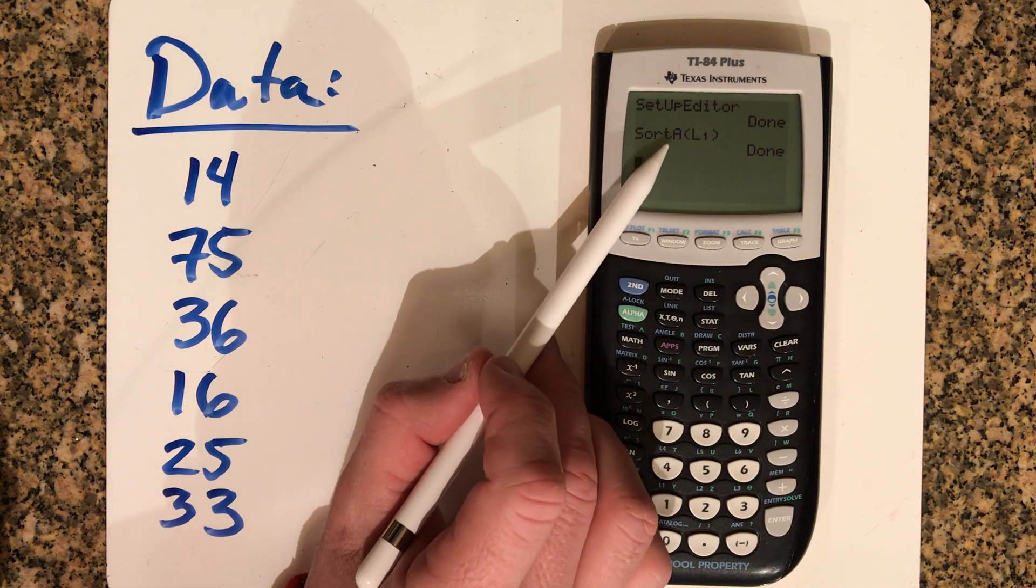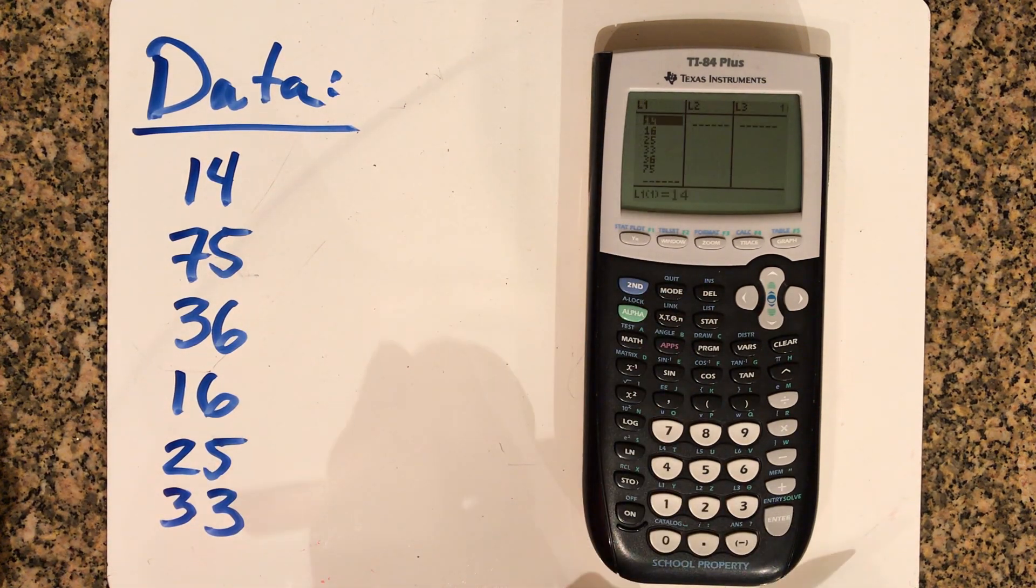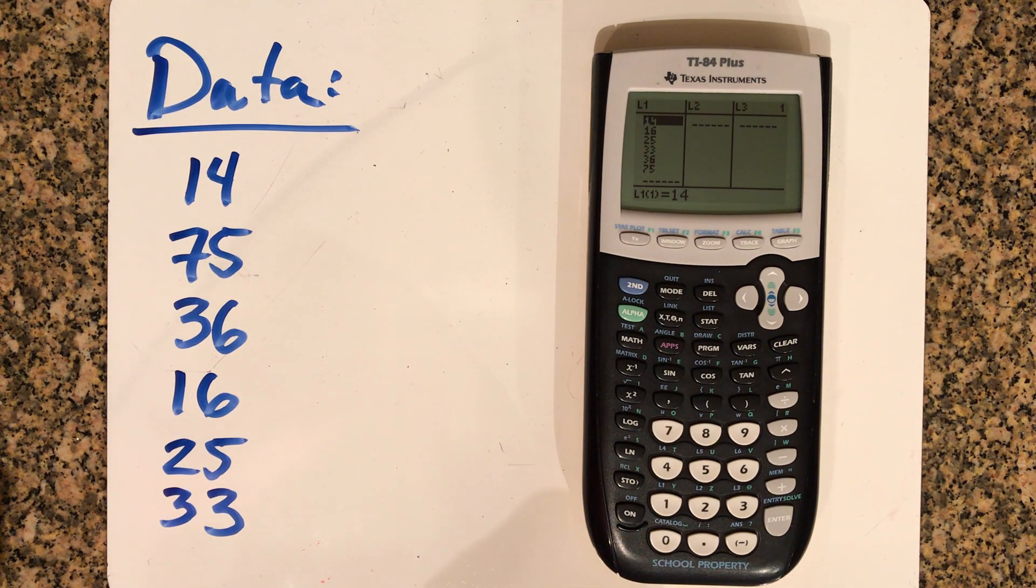And then now what's just happened in the background is on the stat window. When I go back to edit, it's going to have your data from least to greatest. This is an awesome feature to have because now making the dot plots and the stem and leaves and the histograms are going to be a lot easier. Hopefully this video helps and good luck.